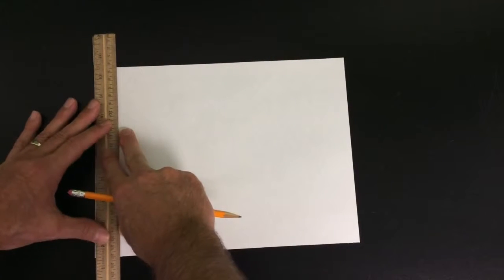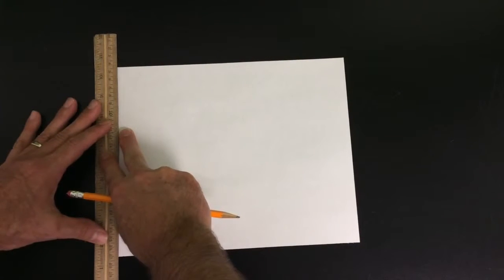For the unit 2 model 2 foldable, which is cloud types, all you need is one half sheet of paper. Turn it sideways like this and take a ruler, make it lengthwise across it, and get it nice and even.